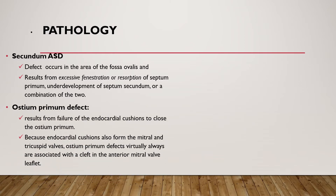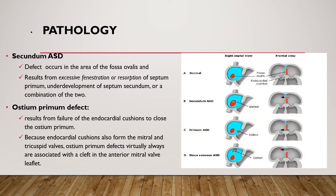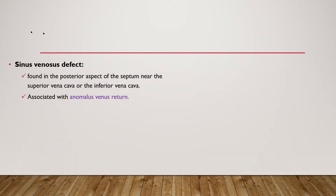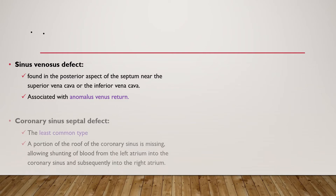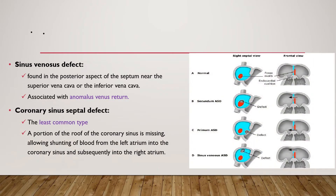Ostium primum defect results from failure of endocardial cushions to close the ostium primum. Because endocardial cushions also form the mitral and tricuspid valves, ostium primum defects virtually always are associated with a cleft in the anterior mitral valve. The sinus venosus defect is found in the posterior aspect of the septum near the superior or inferior vena cava, associated with anomalous venous return. The coronary sinus septal defect is the least common type, with the roof of the coronary sinus missing, allowing shunting from the left atrium into the coronary sinus and subsequently into the right atrium.